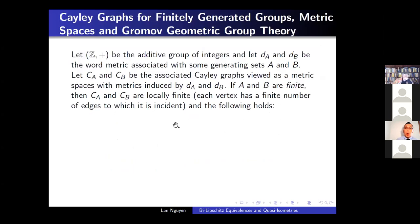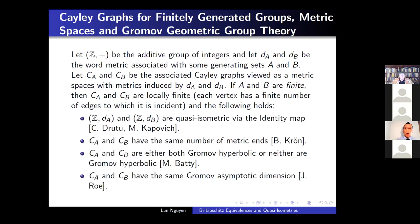Some commonly known facts about Cayley graphs associated to finite generating sets: let A and B be two generating sets with word metrics D_A and D_B, and C_A and C_B the corresponding Cayley graphs. If A and B are finite, then C_A and C_B are locally finite, and it is well known in Gromov's geometric group theory that these two spaces are quasi-isometric via the identity map. C_A and C_B have the same number of metric ends and are either both Gromov hyperbolic or neither are, and they have the same Gromov asymptotic dimension. You can find these arguments in the book on geometric group theory by Drutu and Kapovich.